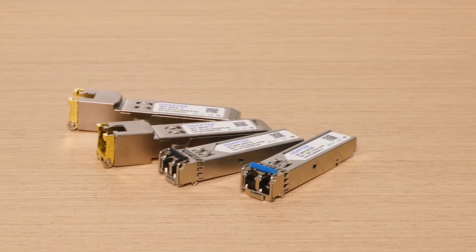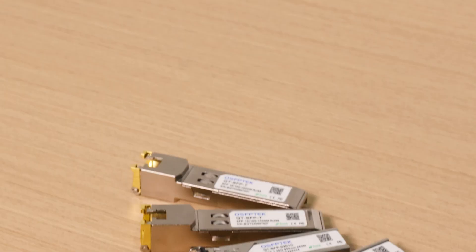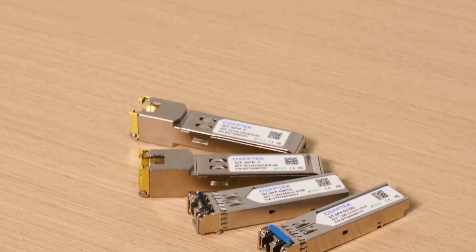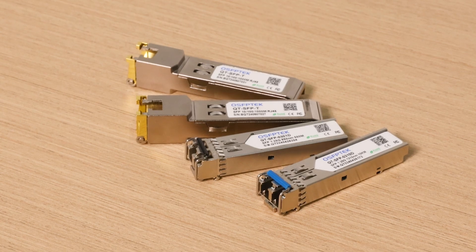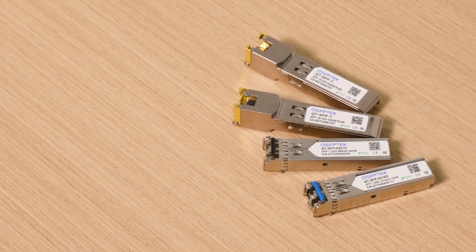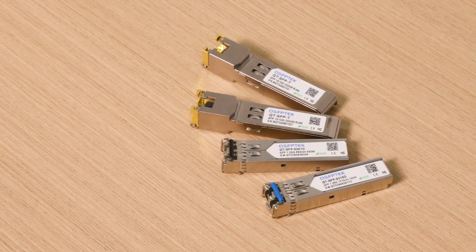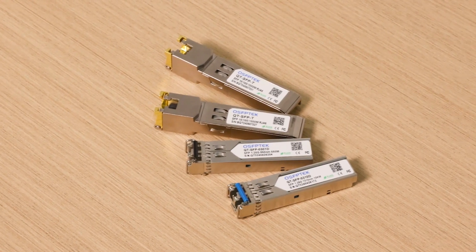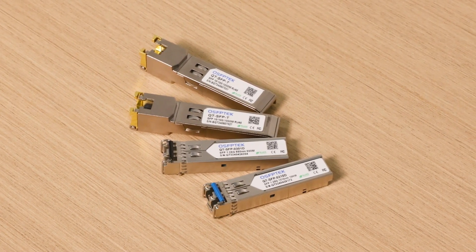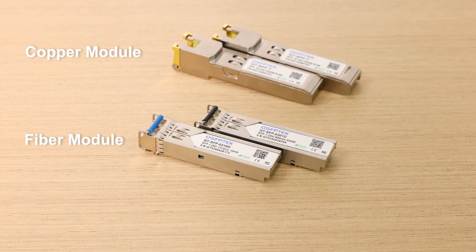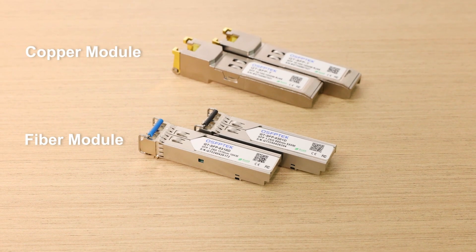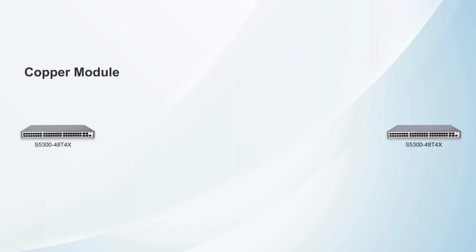In modern network construction, gigabit networks still play a vital role, with copper modules and fiber modules being two common transmission methods. So, how should we choose between them for different applications? What are their differences? First, let's understand their transmission methods.